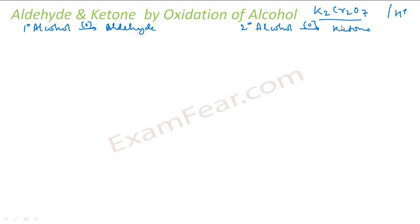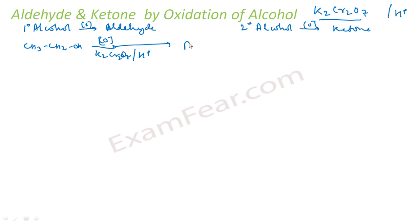There are many oxidizing agents available — chromic acid, chromate salts, dichromate salts, permanganate, PCC (pyridinium chlorochromate), and PDC (pyridinium dichromate). The most commonly used is K2Cr2O7. For example, if I take CH3CH2OH and oxidize it with K2Cr2O7 and H2SO4, I get CH3COOH (acetic acid).